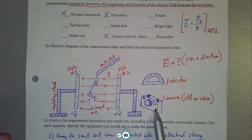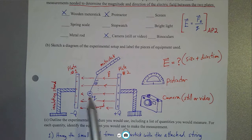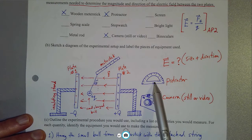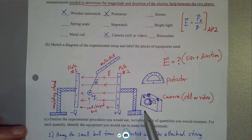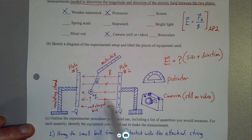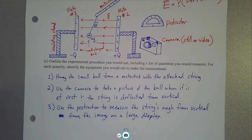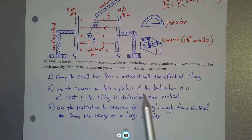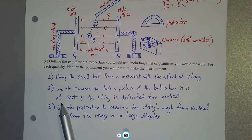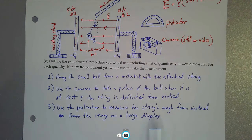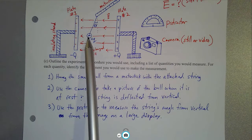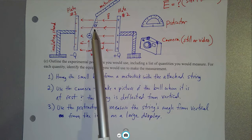I had a camera to take a picture of the mass when it is deflected either to the left or the right. Then we could use a protractor on the image on a computer screen to measure how far from vertical that mass has swung. Here's my experimental procedure: Step 1 — hang the small ball from a meter stick with the attached string. Step 2 — use the camera to take a picture of the ball at rest and when the string is deflected from vertical. Step 3 — use the protractor to measure the string's angle from vertical from the image on a large display. Since we know the mass and charge, all we need to measure experimentally is that angle theta.